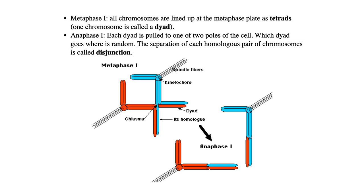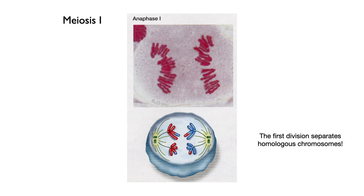So in metaphase we just pull them apart. The first division separates homologous chromosomes: one side of the dividing cell gets one chromosome 1 and one chromosome 2, and the other side gets one chromosome 1 and one chromosome 2. That's what nature wants.